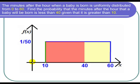So that means we're not going from 0 to 60 rather we're going from 10 to 60 and that length between 10 and 60 is 60 minus 10 which is 50.